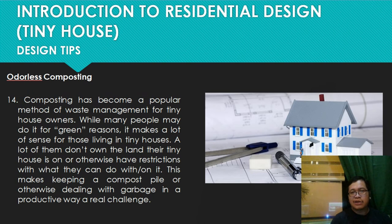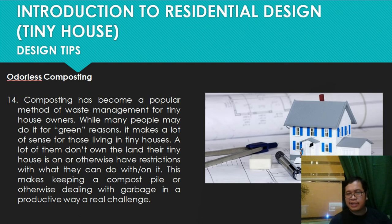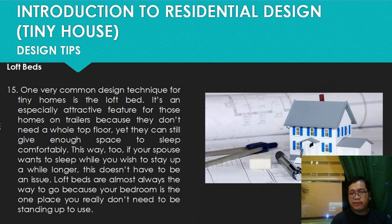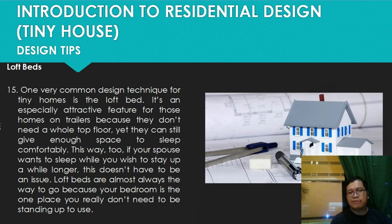Number fourteen: odorless composting. Composting has become a popular method of waste management for tiny house owners. Many do it for green reasons, but it also makes sense for those who don't own the land their tiny house is on or have restrictions on what they can do with it. Number fifteen: loft beds. One very common design technique for tiny homes is the loft bed. It's especially attractive for homes on trailers — they don't need a whole top floor yet can still give enough space to sleep comfortably. The bedroom is one place you really don't need to be standing up to use.